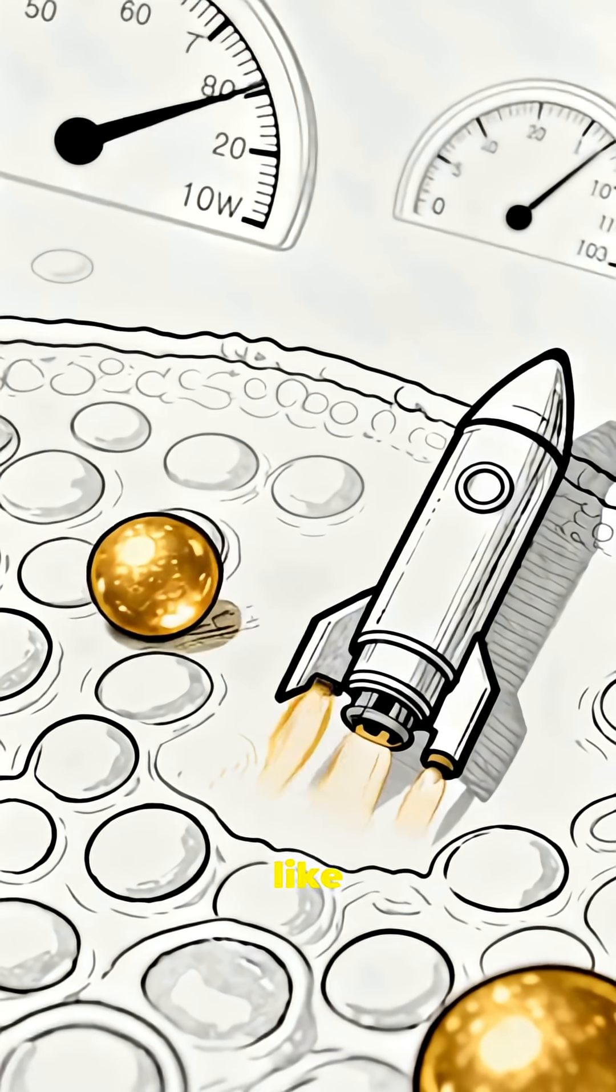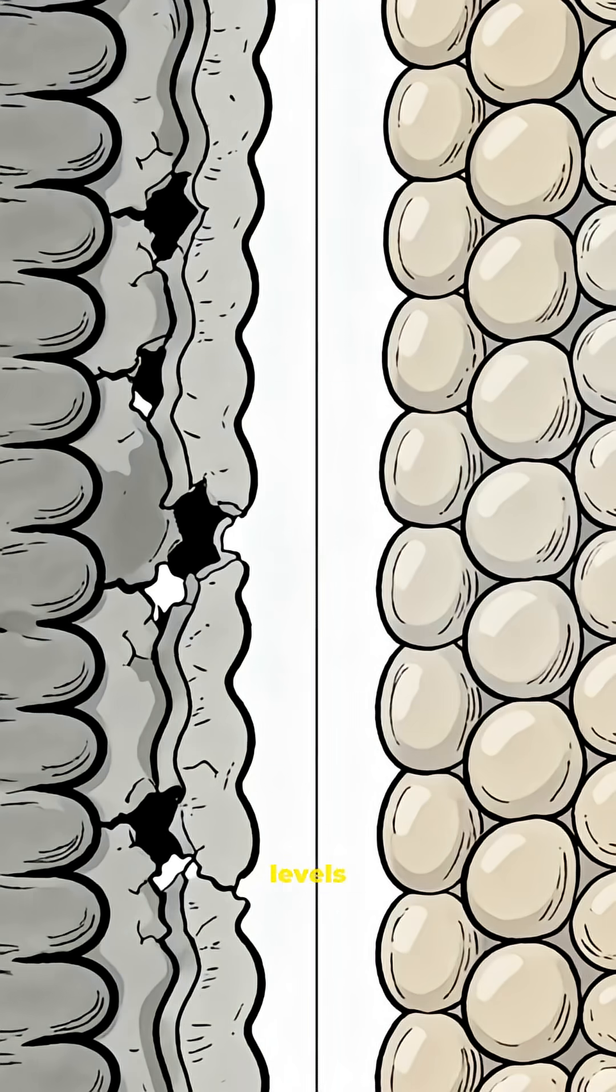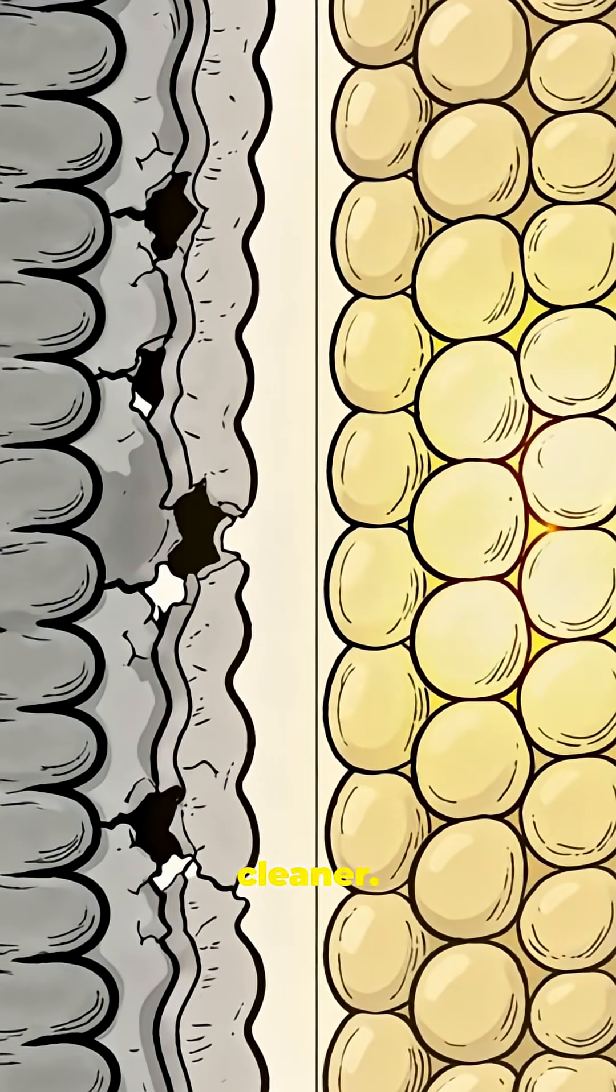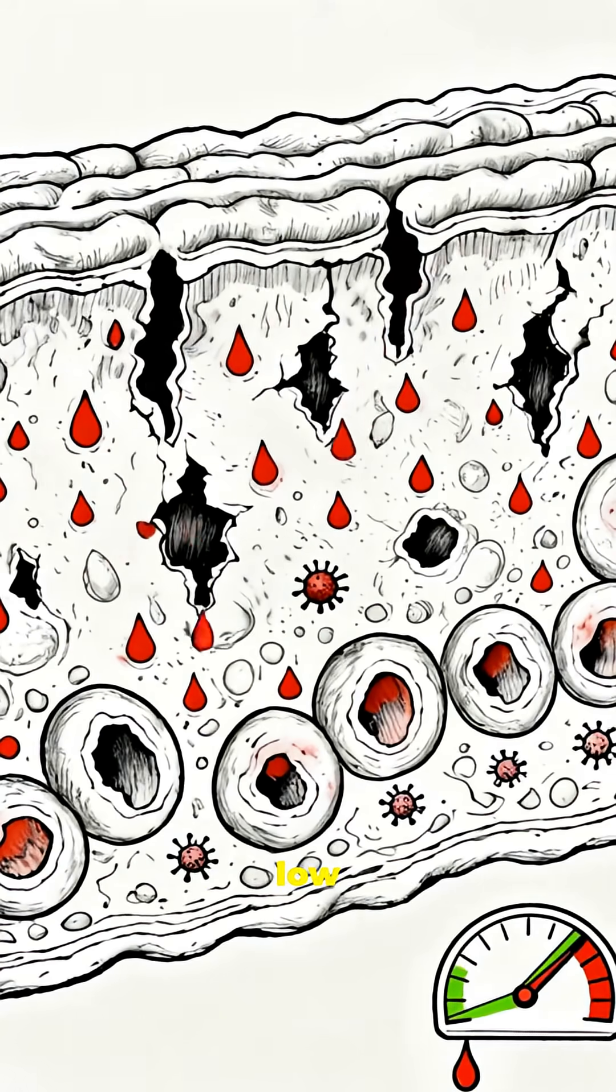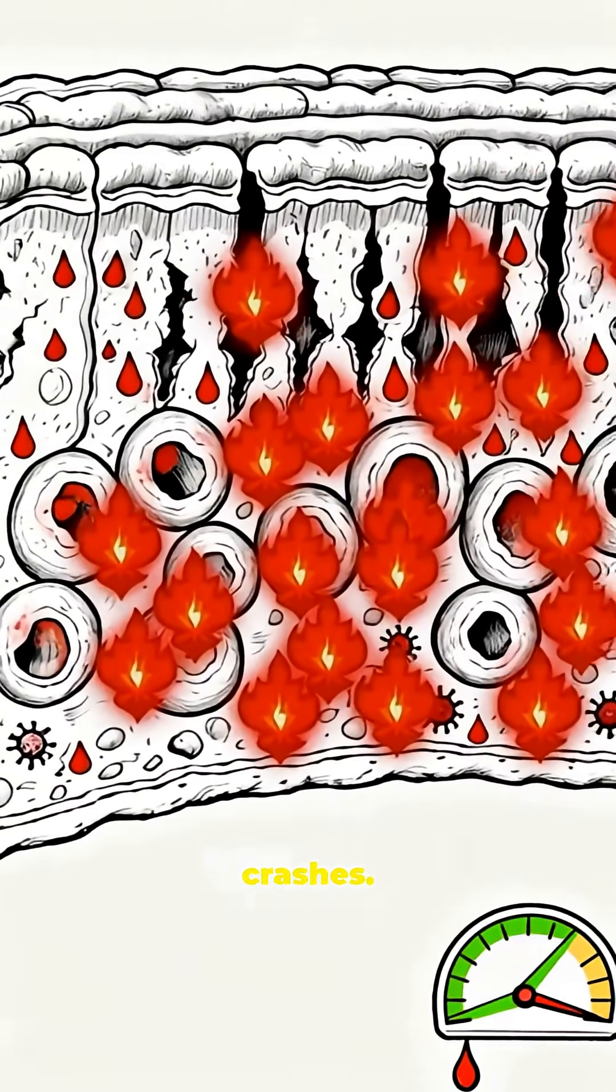It fuels your gut like rocket fuel. Your colon cells run almost entirely on butyrate. When levels are high, the gut wall becomes stronger, tighter, and cleaner. When levels are low, inflammation rises, toxins leak through, and metabolism crashes.